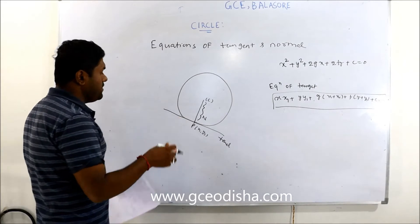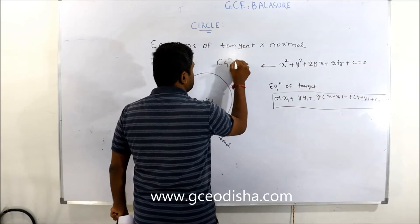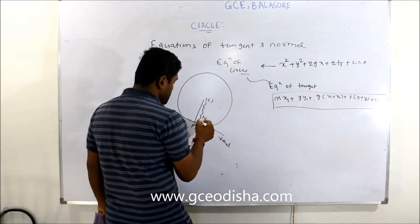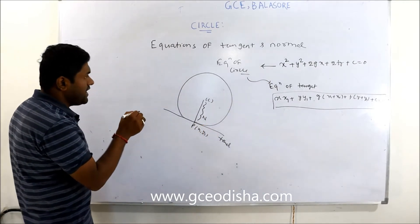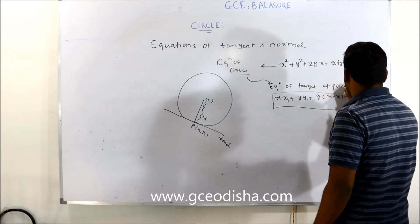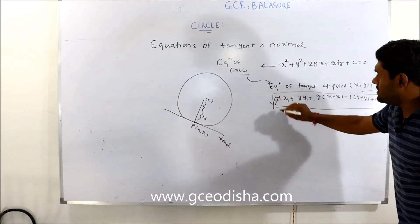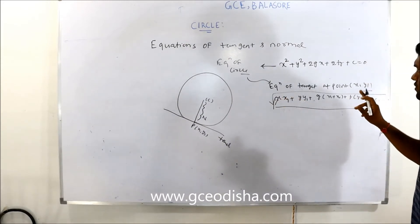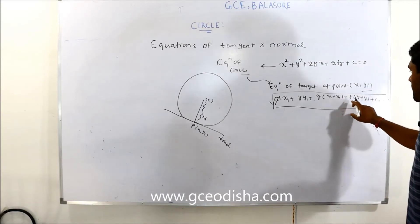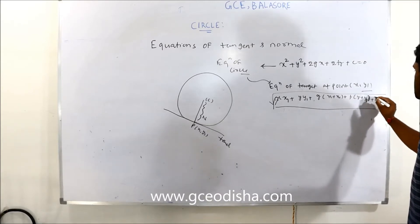So when the circle equation x² + y² + 2gx + 2fy + c = 0 is given, the equation of the tangent at point (x1, y1) is: x·x1 + y·y1 + g(x + x1) + f(y + y1) + c = 0. This is the equation of the tangent at that specific point.